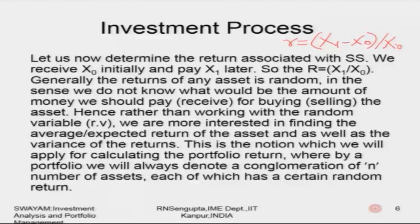This notion will be applied for calculating the portfolio return, whereby a portfolio will always denote a conglomeration of capital N number of assets, each of which has a certain random return. The symbol small n generally refers to the number of assets being sold and bought. We denote a conglomeration of capital N number of assets, each with a certain random return.